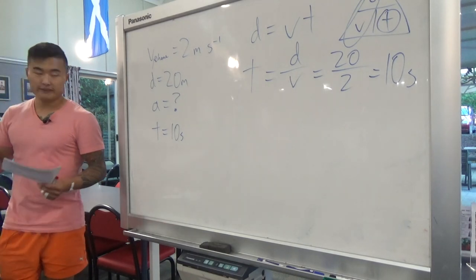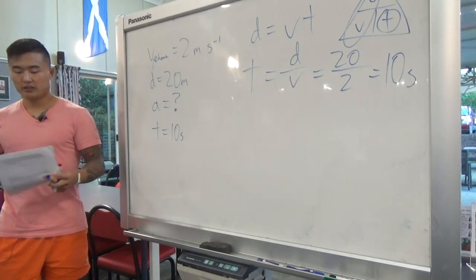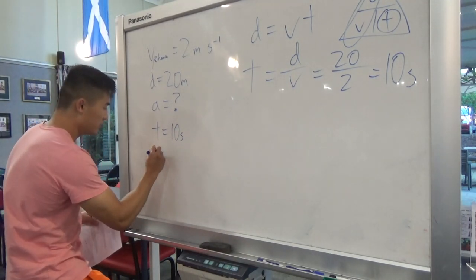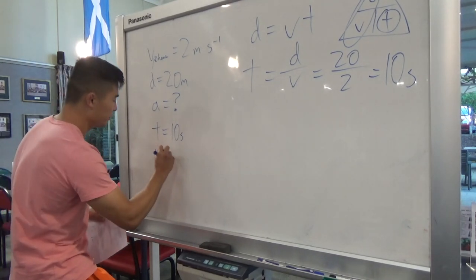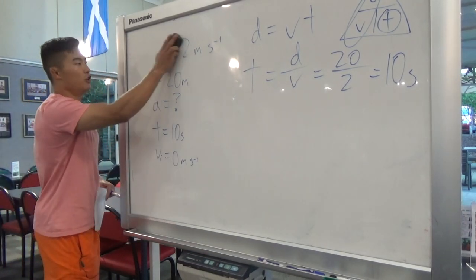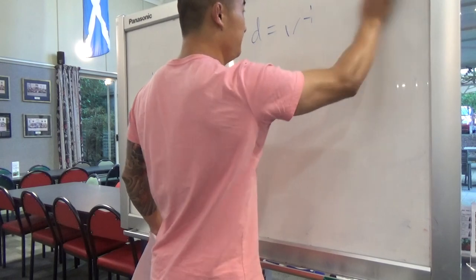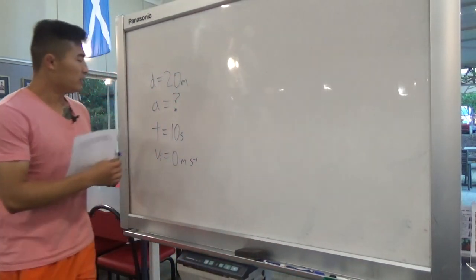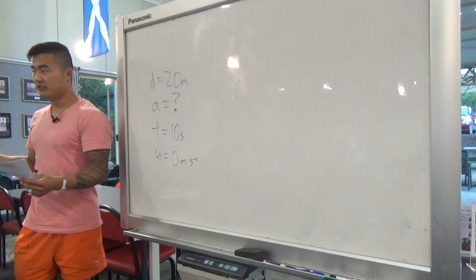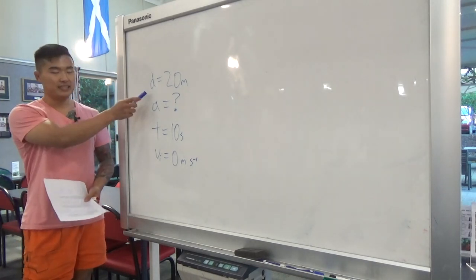Now we have another piece of information — time equals 10 seconds. We also know that your initial velocity is zero because you were just standing there. We now have d, a, t, and vi — the same variables as question one — so we look on the cheat sheet for the equation with these variables.